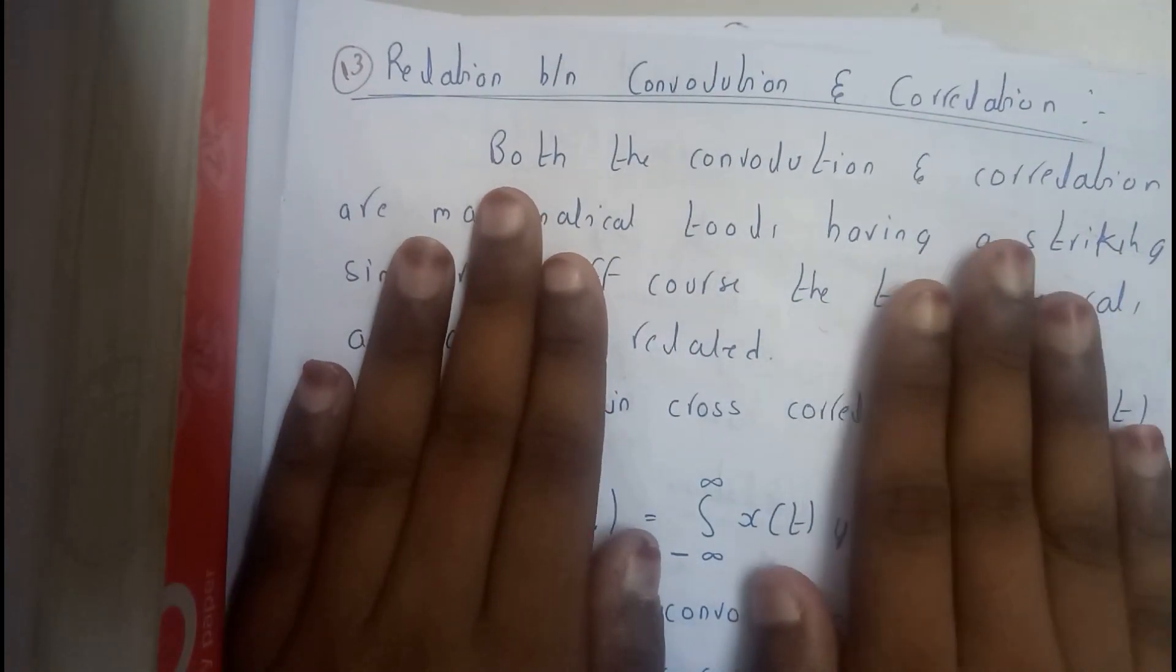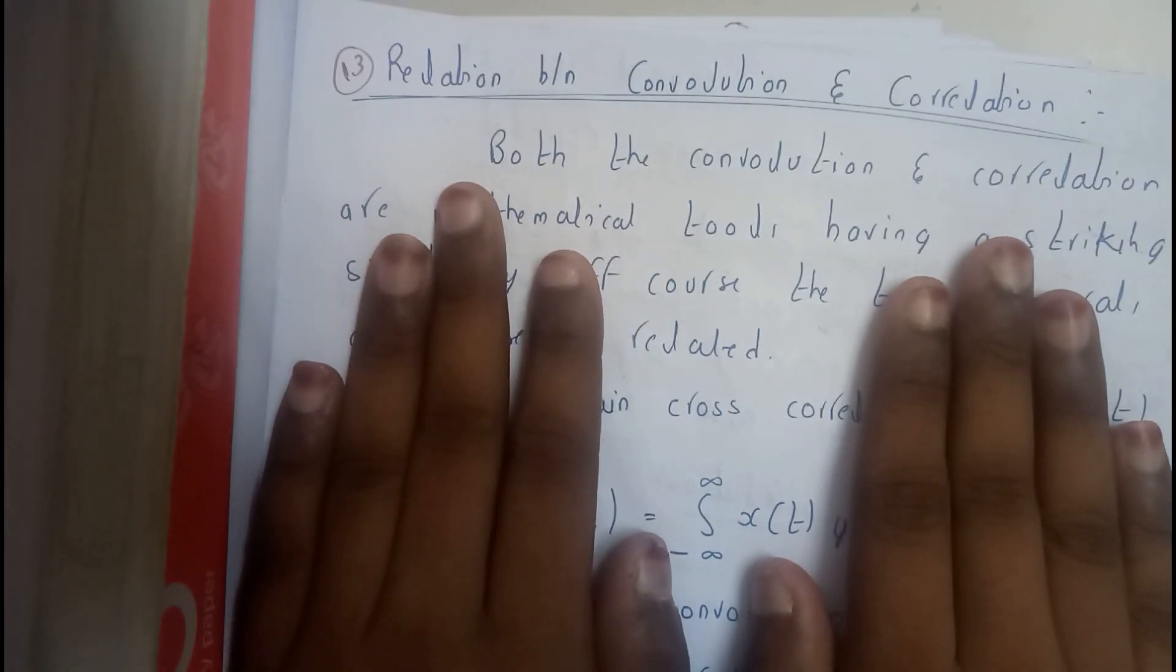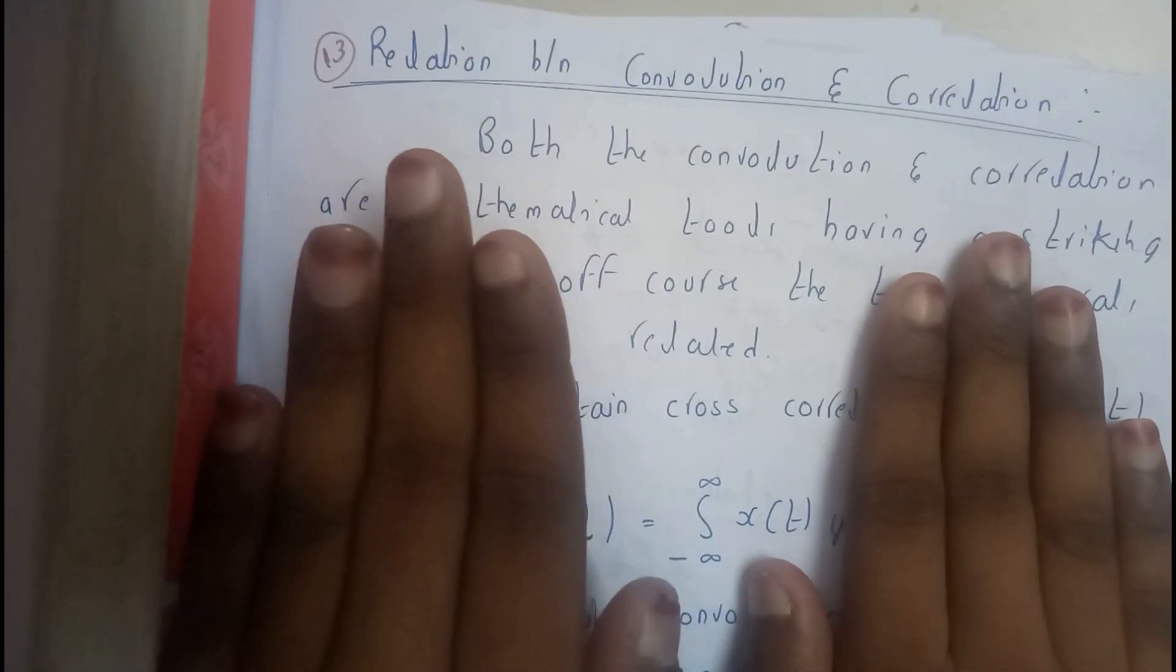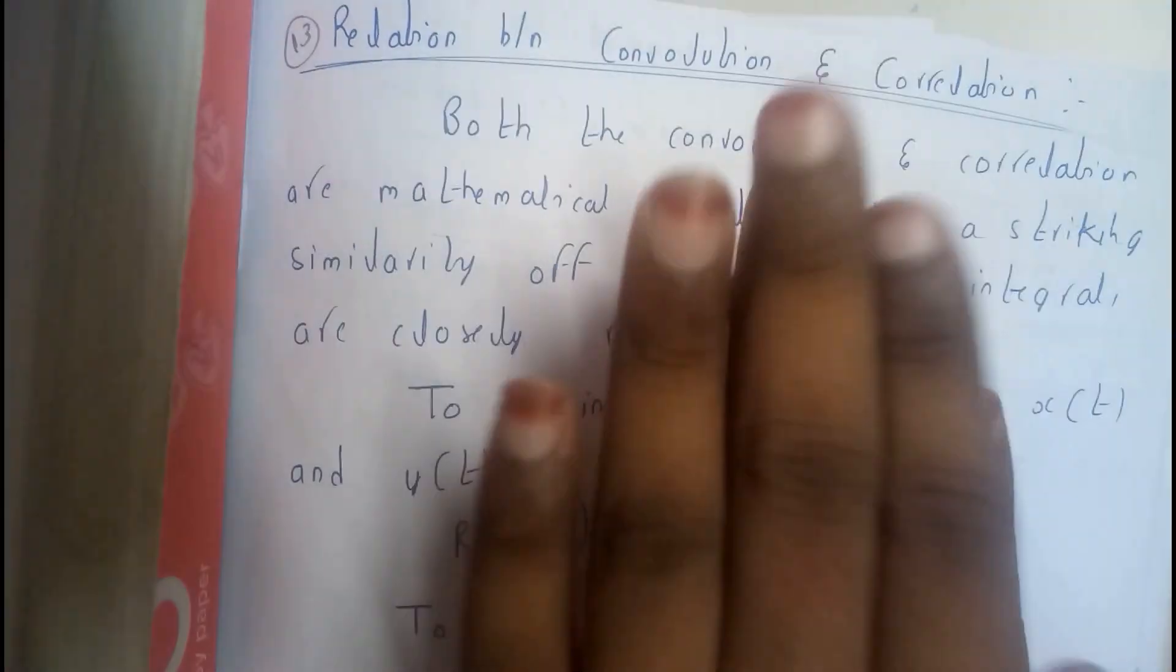Whereas in correlation, there will be no shifting, no reversal. You will be directly shifting it one on another and you will be multiplying.